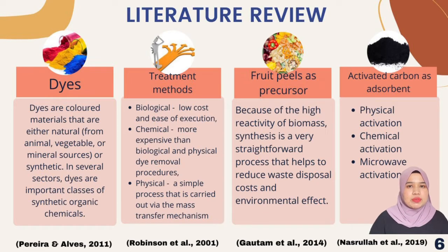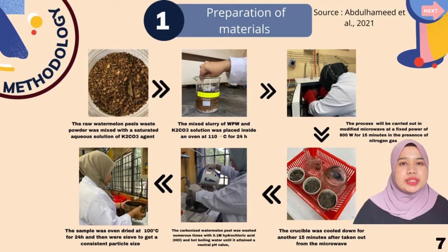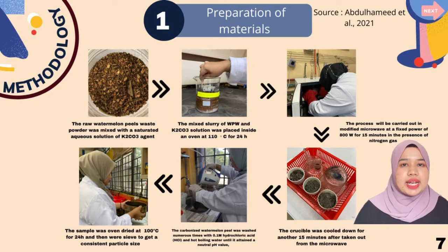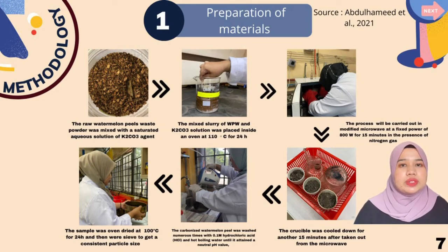Activated carbon as absorbent has three activation types: physical activation, chemical activation, and microwave activation. The first step is preparation of material. The raw watermelon peel waste powder was mixed with a saturated aqueous solution of potassium carbonate agent. The mixed slurry was placed inside an oven at 110 degrees Celsius for 24 hours. The process was carried out in a modified microwave at a fixed power of 800 watts for 15 minutes in the presence of nitrogen gas. The crucible was cooled down for another 15 minutes after being taken out from the microwave.